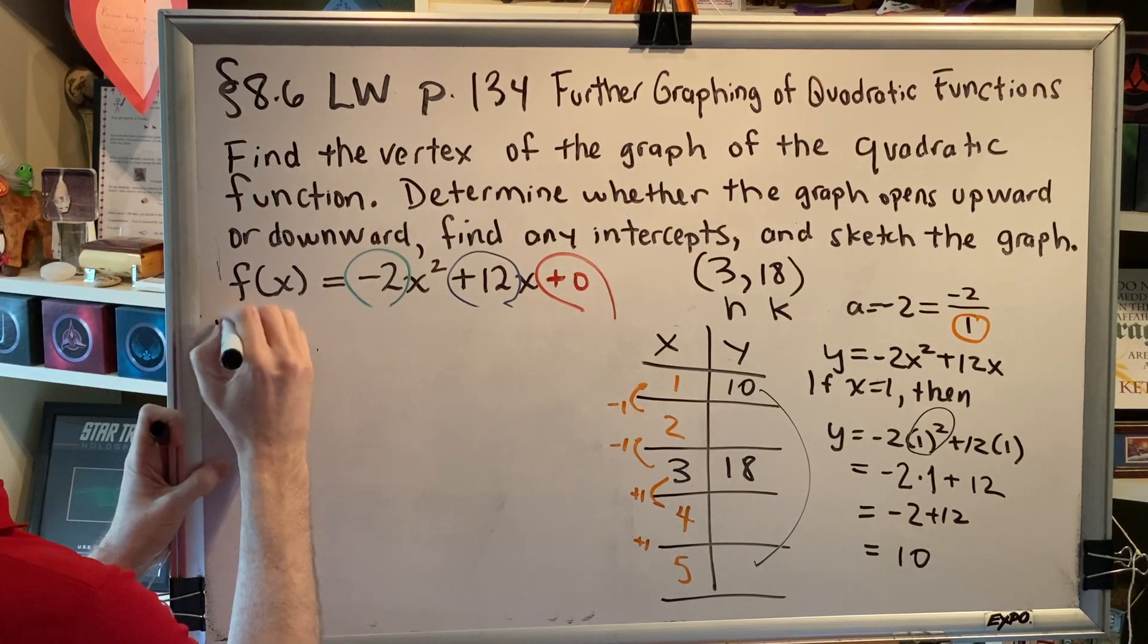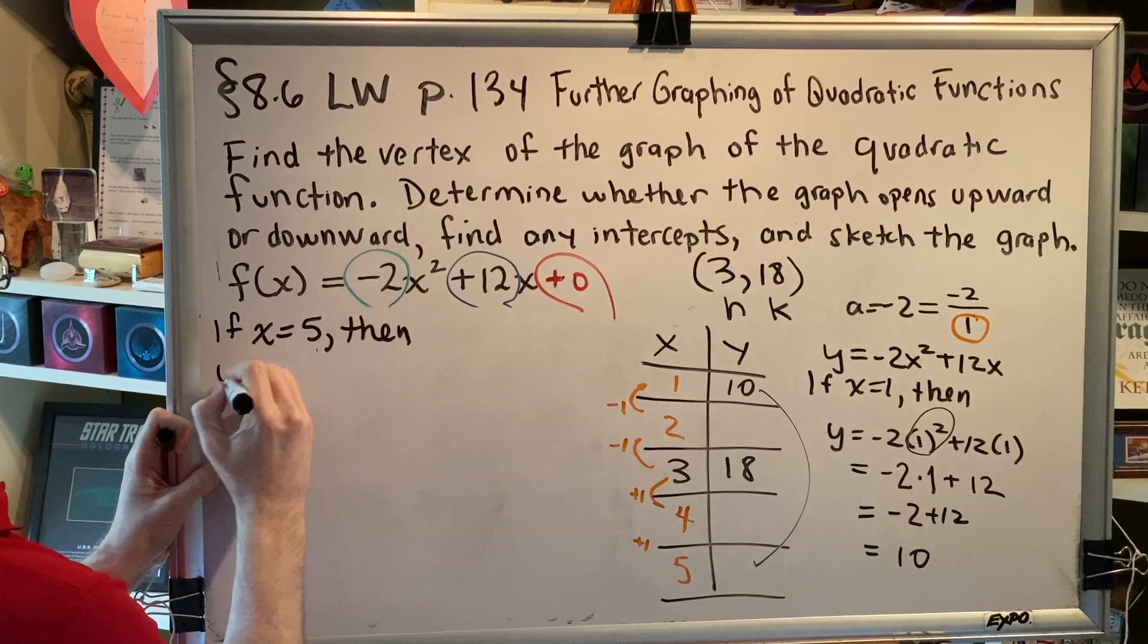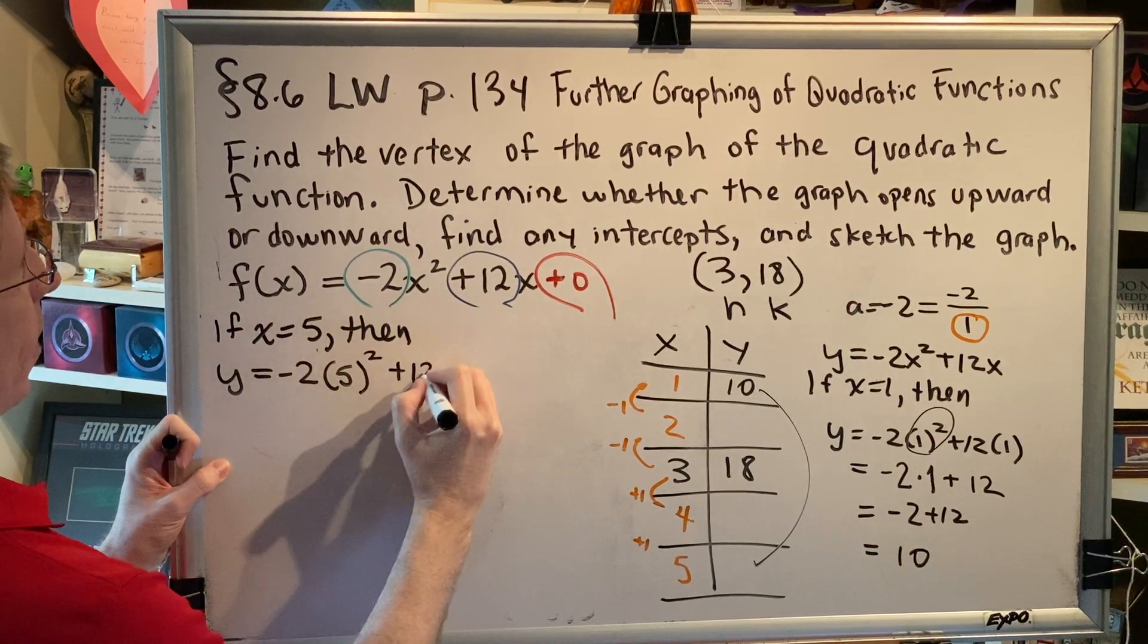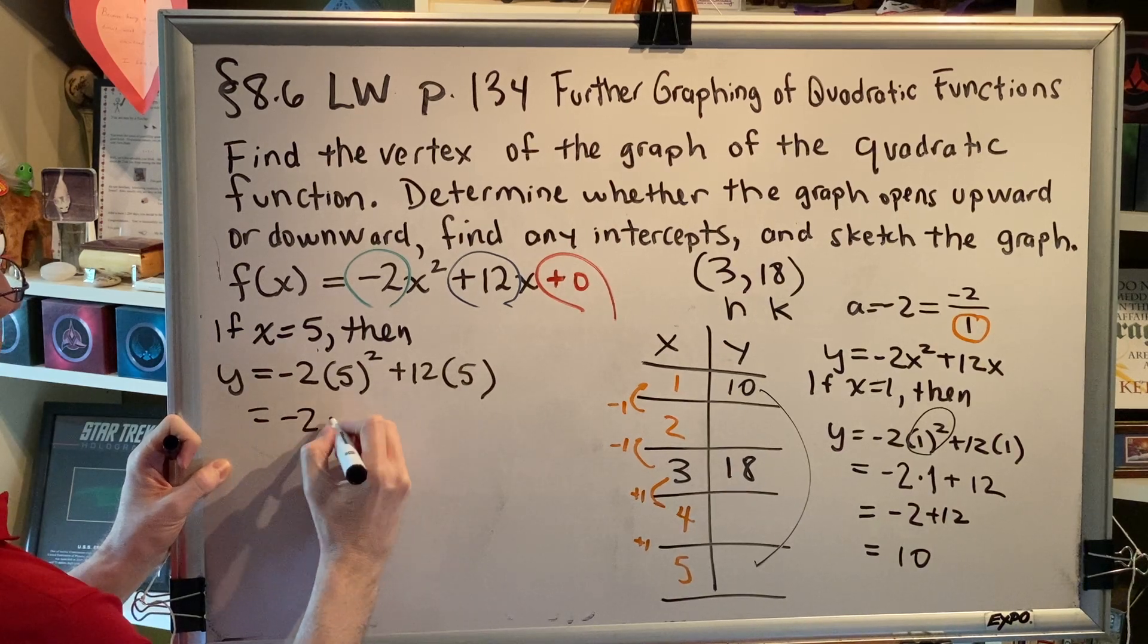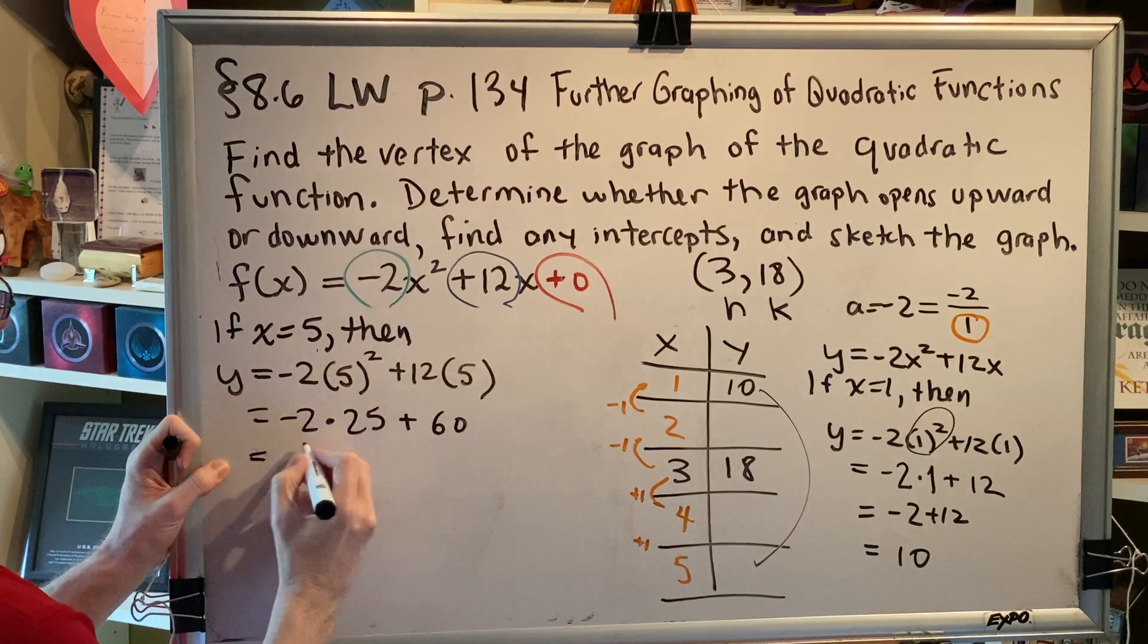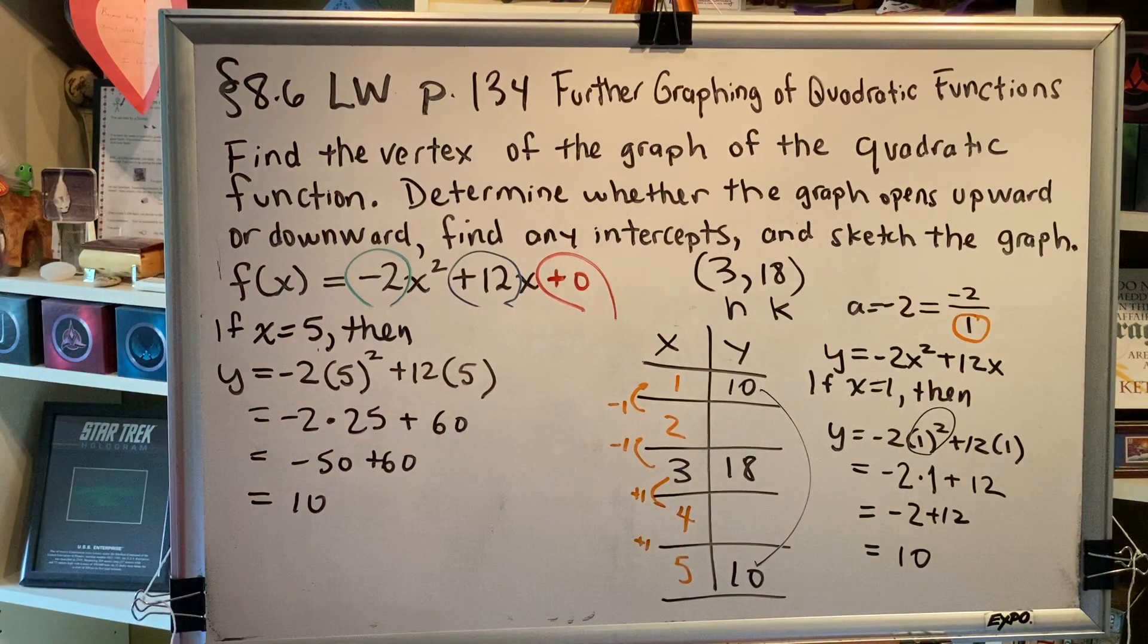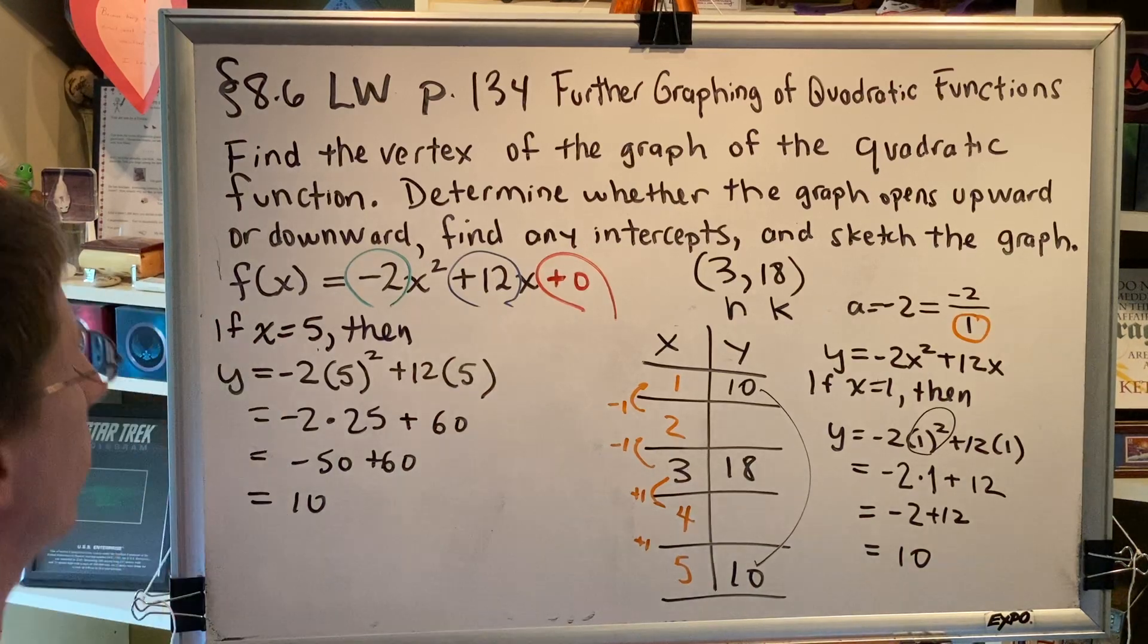If x equals 5, then y = -2(5)² + 12 times 5. Order of operations says the exponent comes first. 5 squared is 25. Negative 50 plus 60 equals 10. And that's exactly the value that we were expecting to get. So, that gives me confidence that we are solving this problem correctly.